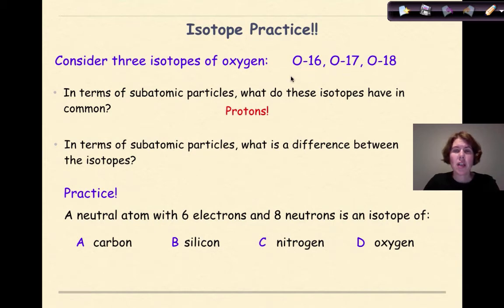In terms of subatomic particles, what is the difference between the isotopes? Well, 16, 17, and 18, they all have different atomic masses, but we know they each have 8 protons. So what could the difference be? If you said neutrons, you're correct. The number of neutrons for Oxygen-16 would be 8. The number of neutrons for Oxygen-17 would be 9. And the number of neutrons for Oxygen-18 would be 10.